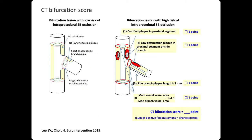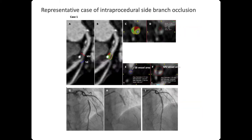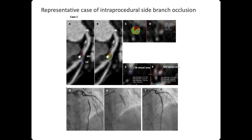We developed the CT bifurcation score, which calculates the risk of side branch occlusion based on: presence of calcified plaque, low-attenuation plaque, length of side branch plaque, and the ratio of main vessel to side branch vessel area. The sum of these four points is the CT bifurcation score. As a case example of intra-procedural side branch occlusion in an LAD-diagonal bifurcation region, there was a large amount of low-attenuation and calcified plaque in the LAD-diagonal branch. Although the diagonal branch was protected by wire, it suddenly disappeared.